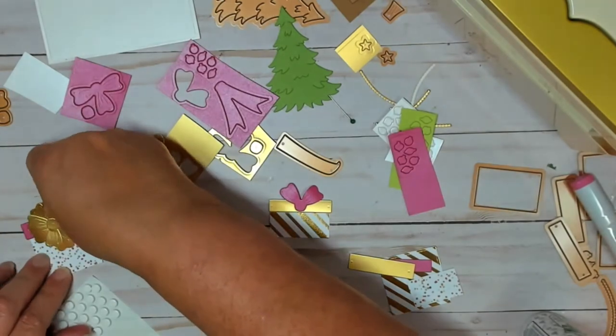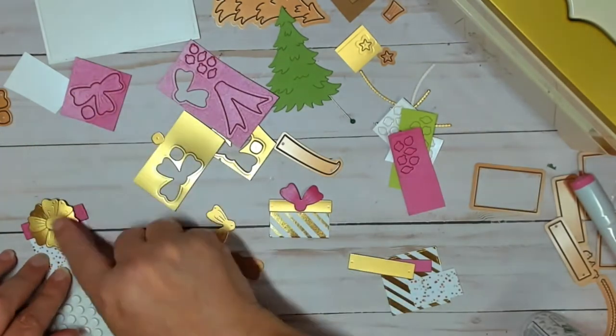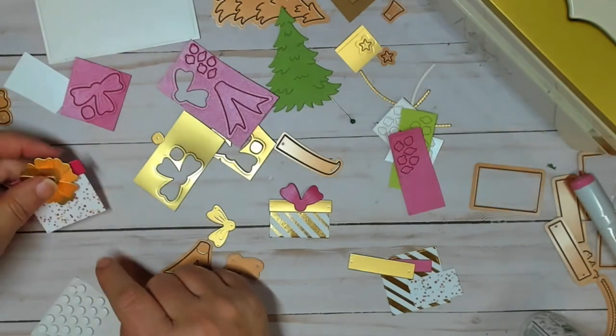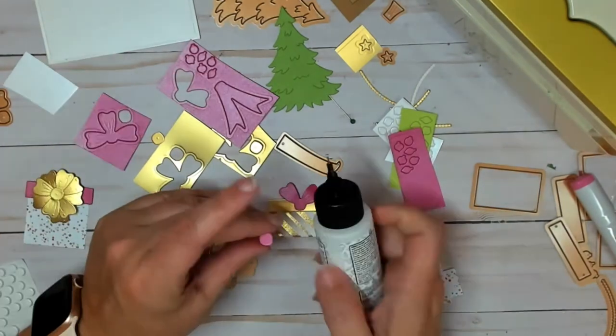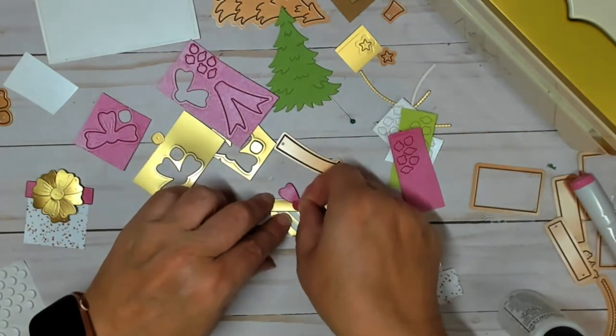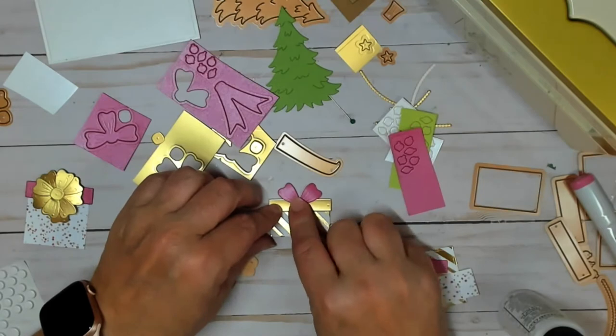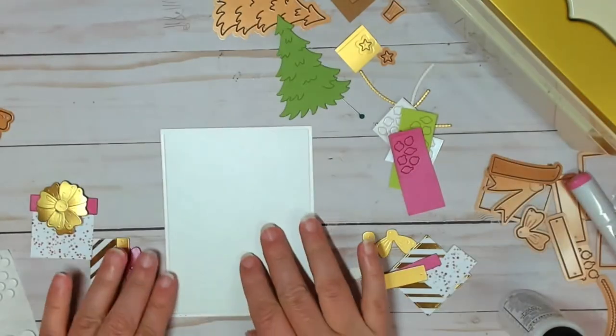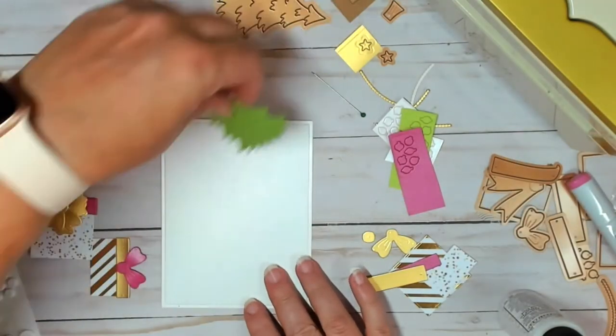Now you can see that I used a round foam adhesive and put that on the box and then the bigger bow on top. With the little one, I did not do that. I felt like I didn't really need that added dimension.